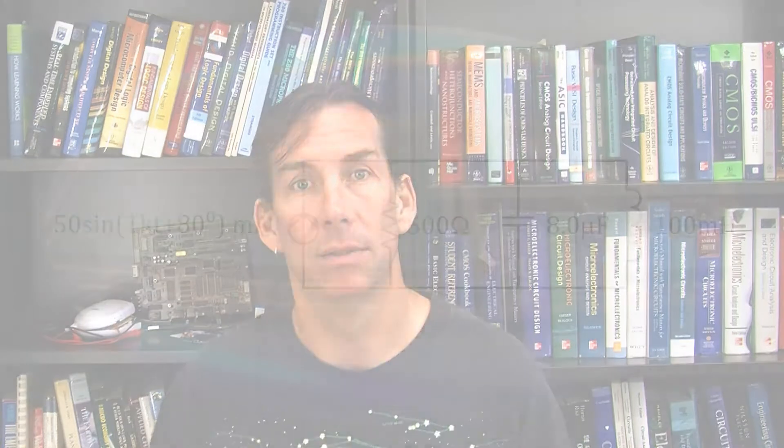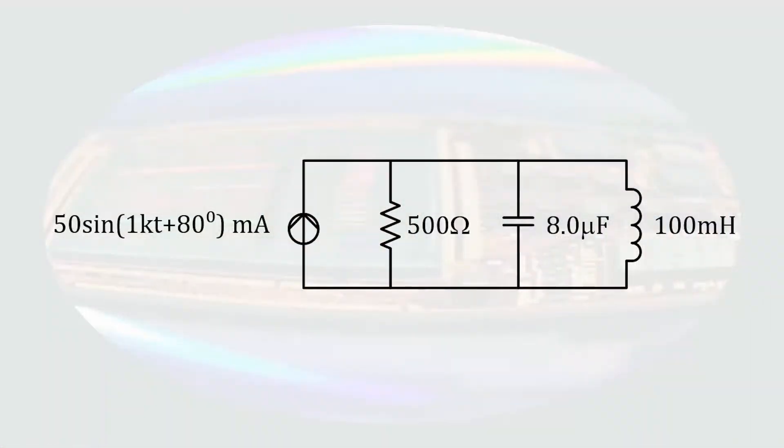Moving on, a current division will illustrate a couple more points. In this circuit, we have a resistor, a capacitor, and an inductor in parallel with the current source. That's an obvious setup for current division. For a goal, let's see if we can determine the time-dependent current through the inductor. To do this, we will use phasor analysis.